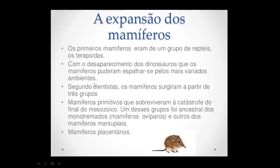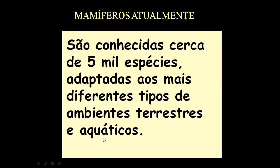Os primeiros mamíferos vieram de grupos dos répteis terapsidas. Desaparecendo os dinossauros, eles conseguiram se espalhar e conquistar os mais diferentes ambientes. Os mamíferos primitivos sobreviveram à catástrofe que levou os dinossauros à extinção. Atualmente temos 5 mil espécies de mamíferos em muitos habitats diferentes, desde os polos até ambientes desérticos e aquáticos.